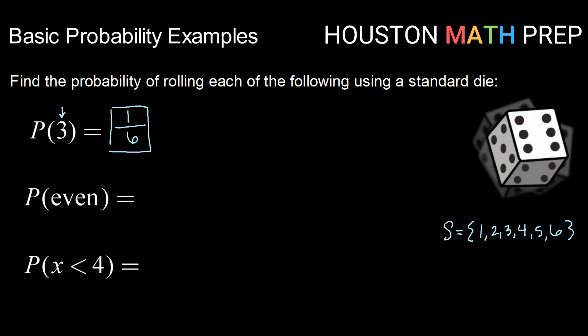When we start to look at different combinations, for example, the probability of rolling an even number. Well, there's more than one even number. So let's see. Even, we have six possible outcomes, and how many of them are even?